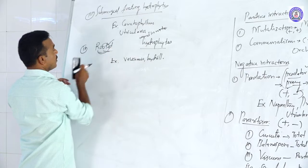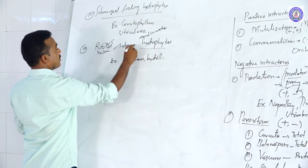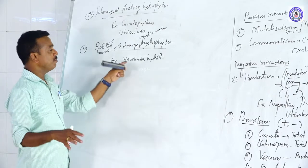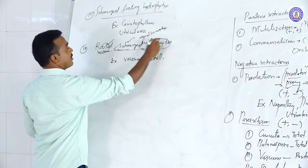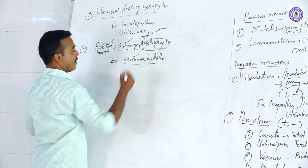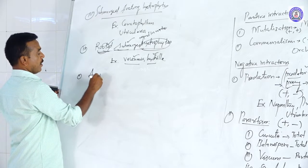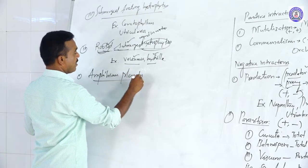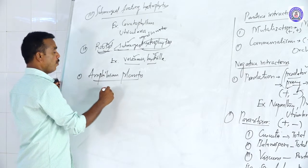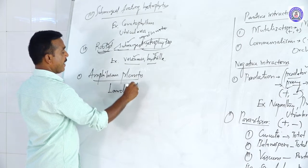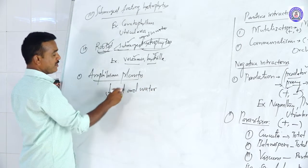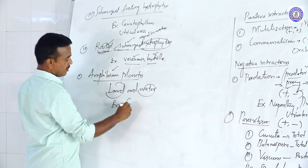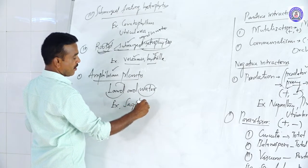Fifth type: rooted submerged hydrophytes. The roots are attached to the mud, but the whole plant is immersed in the water bodies. Examples include Vallisneria and Hydrilla. Sixth type: amphibious plants — plants existing in both land and water. Examples include Sagittaria and Typha. These kinds of plants generally occur in shallow water.